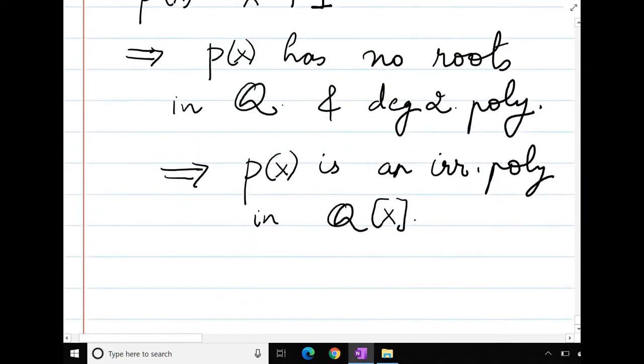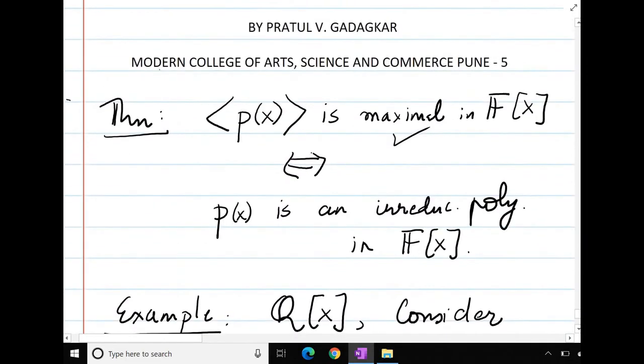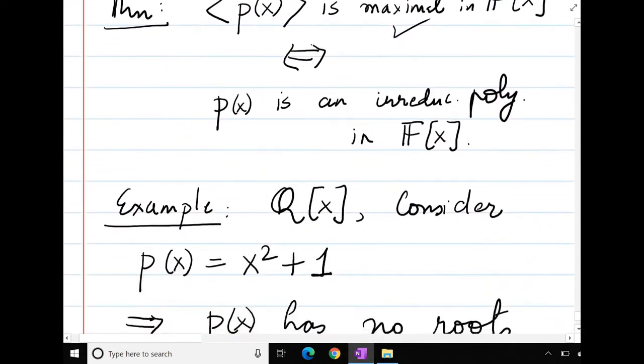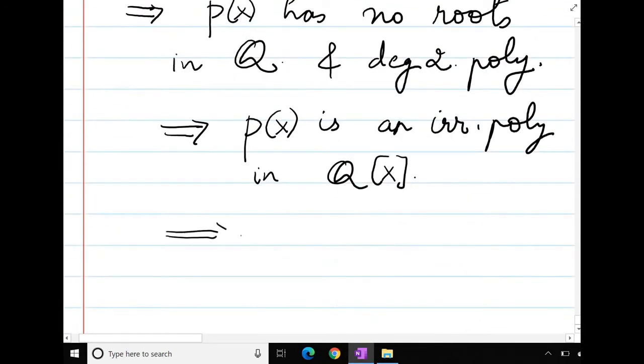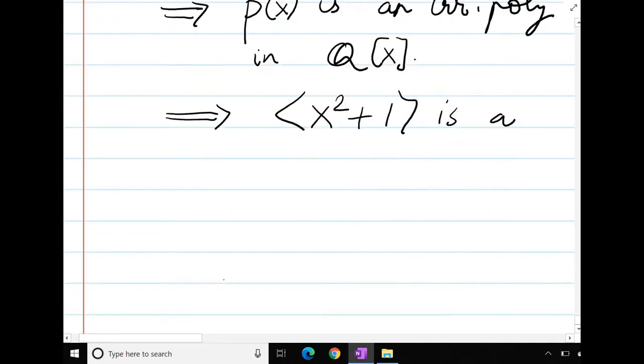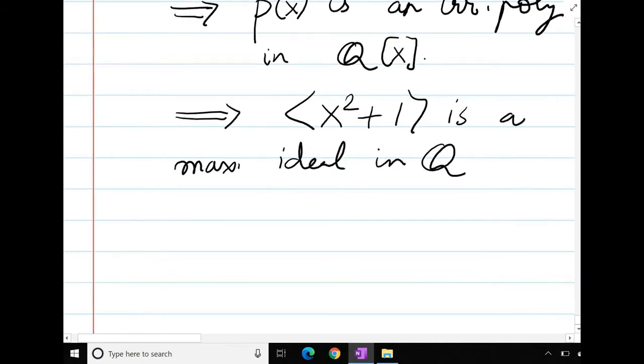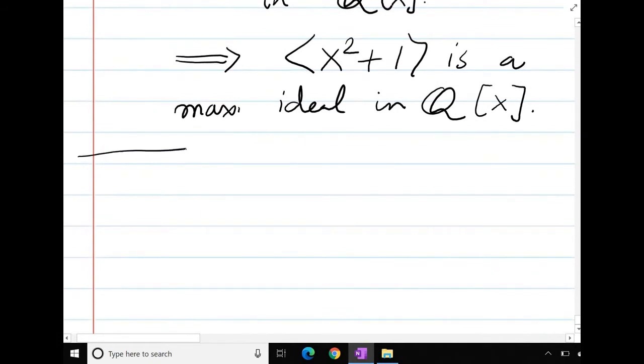And therefore by the above theorem, the ideal generated by p(x) is a maximal ideal in Q[x]. This is how one can show that an ideal is maximal.